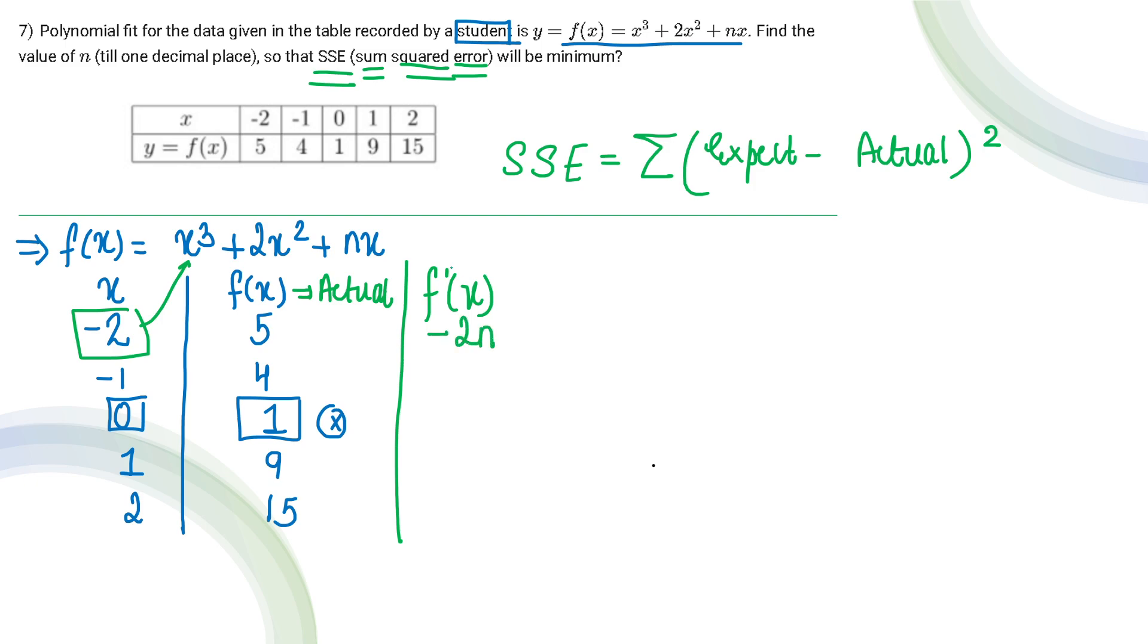f'(x) is the theoretical value. When we put x = -2 in this equation, I will get -2n. When we put -1, I will get 1-n. When we put 0, we get 0. When we put 1, we get 3+n. And when we put 2, we get 16+2n. Now I have the actual values and the theoretical values.